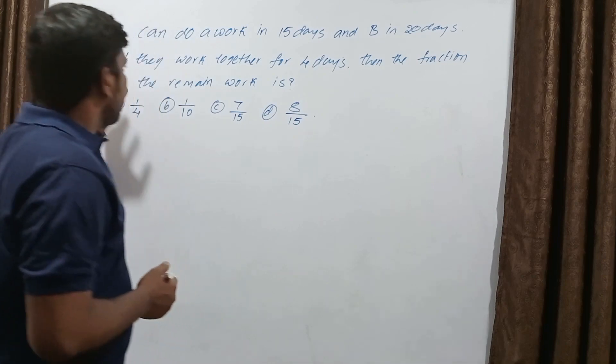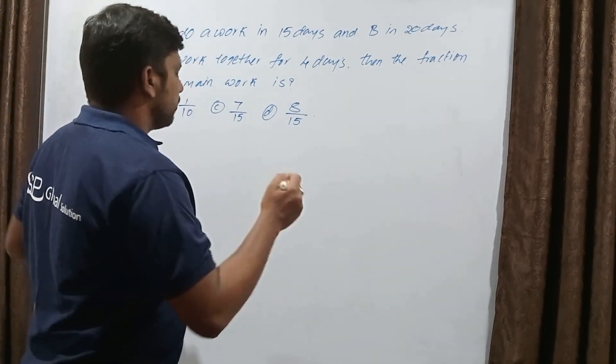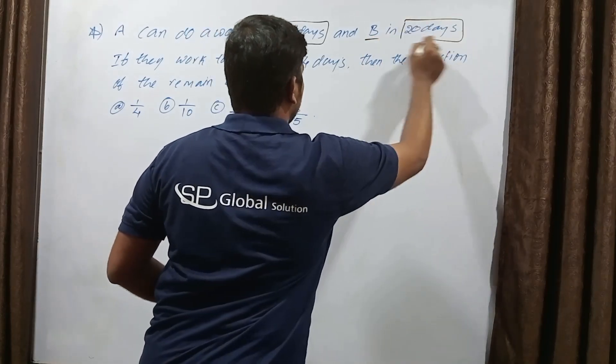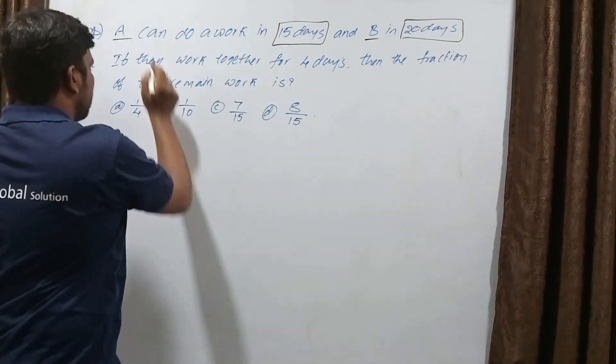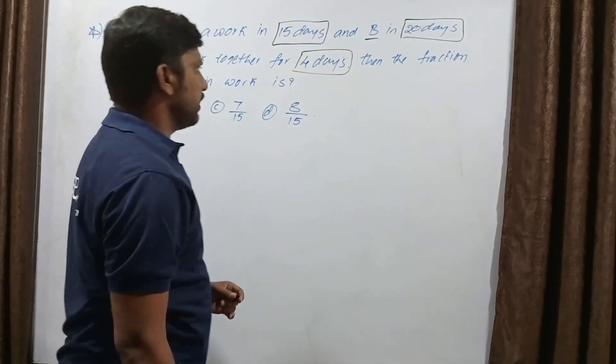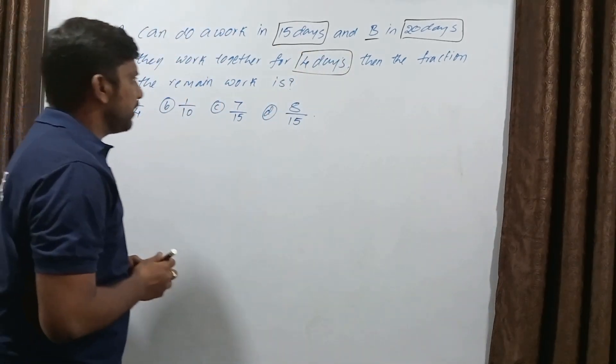The problem is: A can do a work in 15 days and B in 20 days. If they work together for 4 days, then find the fraction of the remaining work.